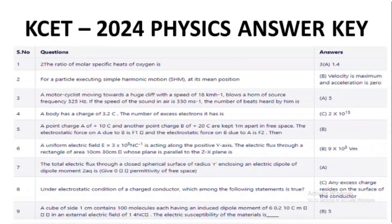Here is the KCET 2024 Physics answer key. For example, one question is 'the ratio of molar specific heats of oxygen' — you might get it at question 20, 25, or 30 depending on your set, but the question and options remain the same. You can pause this video and mark your answers. In this slide you have questions 1 to 9 with correct answers solved by experts.